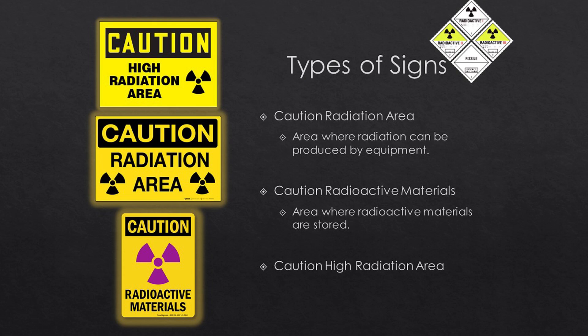The third sign is 'Caution High Radiation Area.' If you're taking this class and you have any ability to get near a high radiation area, you should talk to your supervisor, administrator, or radiation safety officer about additional education — because if you're taking this annual radiation safety training, you probably don't need to be working in that area.